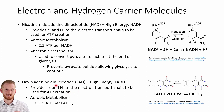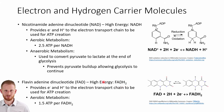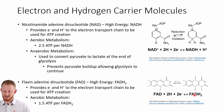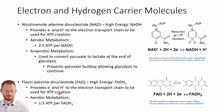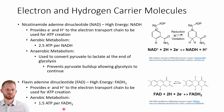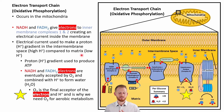FAD stands for flavin adenine dinucleotide. FADH2 is the high-energy version of FAD — when we take FAD and add a couple of hydrogen ions and two electrons, we turn it into FADH2. This is the version that goes into the electron transport chain to make ATP, and we get 1.5 ATP molecules out of every FADH2 molecule broken down in the electron transport chain.